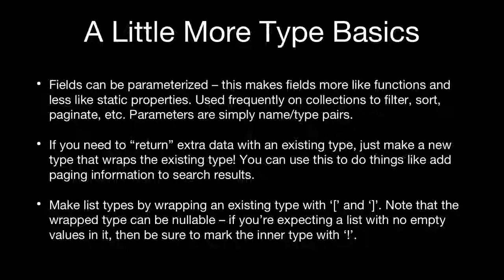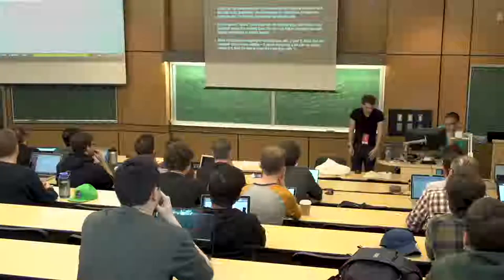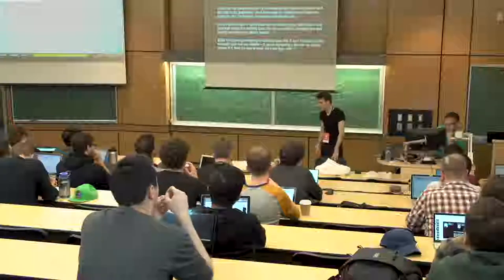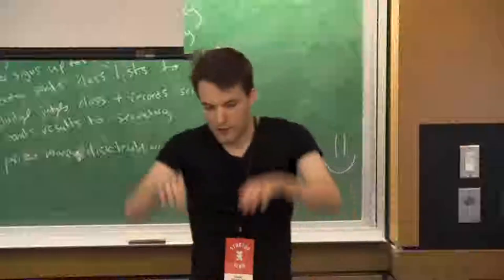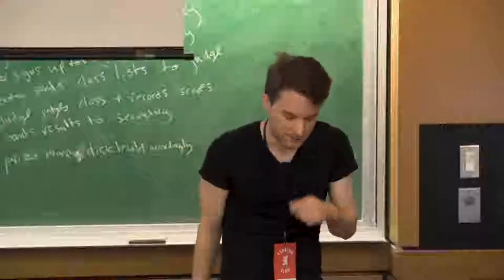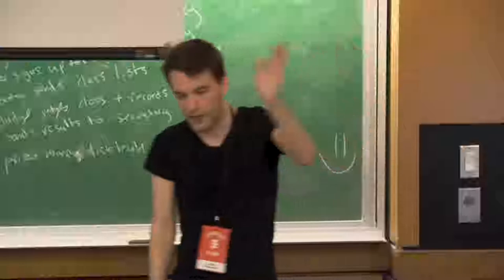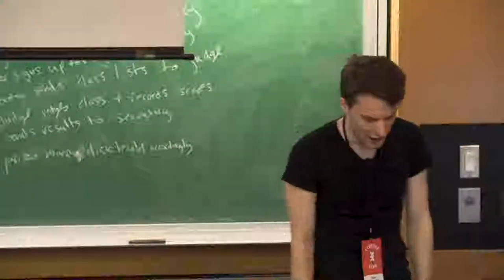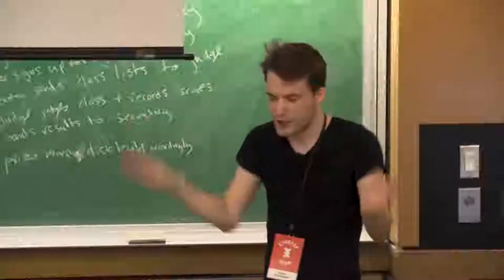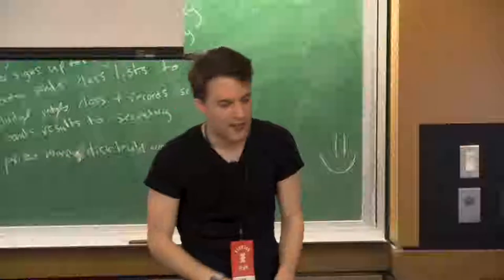Fields can be parameterized, which makes them much more like functions than static properties. This is used frequently for pagination, sorting, and filtering. If you need to return extra data, you wrap that field. You make list types by putting square brackets around them. A common pitfall: most list types will be non-null — you don't want a list with holes, like three integers then null then three more. So the inner value is typically non-null, and the outer list is also typically non-null, because you'd rather deal with an empty list than both an empty list and null.